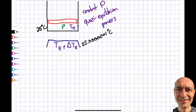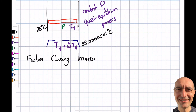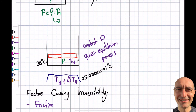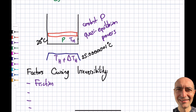Let's talk about the factors that cause irreversibility. The first one is friction. If there's friction on the piston, when the piston goes up the friction opposes it, and when it comes back down the friction opposes it again — they don't cancel each other. Friction causes irreversibility in the system.